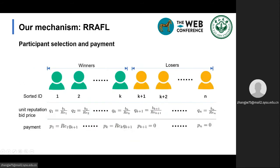To obtain a better global model with a limited budget, firstly participants with low bids should be selected, and secondly participants with better data quality should be selected. According to this idea, we sort the candidates in non-descending order of their unit reputation bid price. We select the maximum number of participants from front to back on the condition that the product of the total comprehensive reputation of these winners and the unit reputation bid price of the first unselected candidate will not exceed the requester's budget. Each winner's reward is their comprehensive reputation multiplied by the unit reputation bid price of the first unselected candidate.